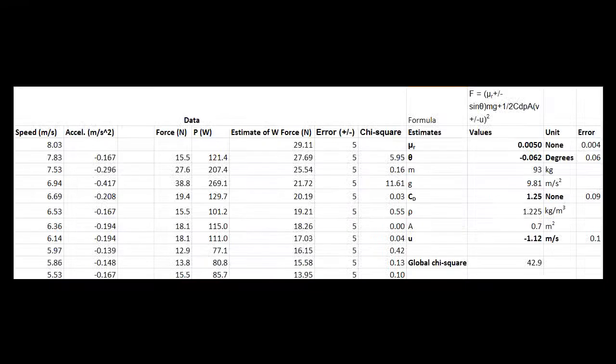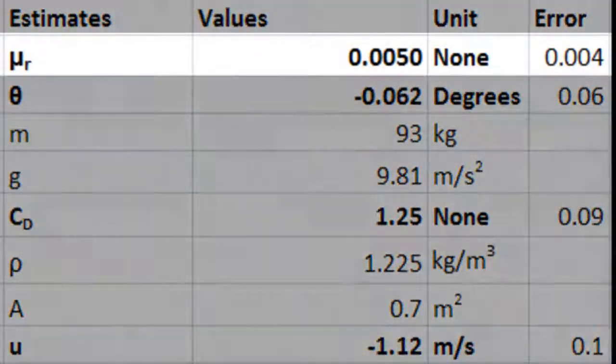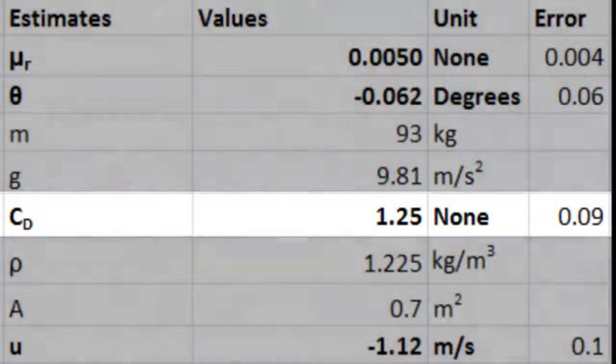By modeling this force in terms of the inclination of the road, rolling resistance, and air drag, we can extract important physical data like the coefficient of rolling resistance and the drag coefficient of the bike and rider.